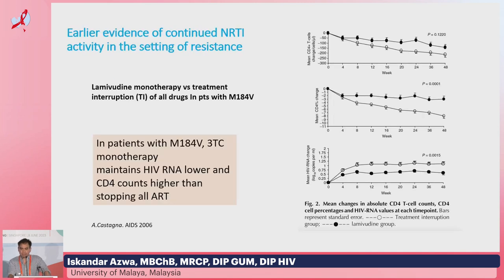The early evidence of continued NRTI activity in the setting of NRTI resistance was shown as early as 2006, where patients who had evidence of 3TC resistance with M184V — in this study it showed that if you continued 3TC monotherapy versus stopping all antiretroviral therapy, 3TC monotherapy continued to maintain HIV viral loads and CD4 counts higher than stopping all ART.